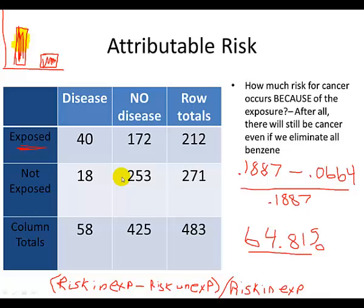And that's all there is to attributable risk. It's the top portion of that graphic description of the risk in the exposed that we're trying to calculate — what percentage of that column is because of the exposure, which is 64.81% in this case.